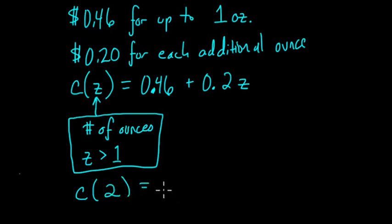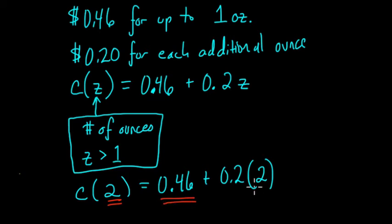Look what happens if you plug in 2 for Z. We get 0.46 plus 0.20 times 2. And now think about this, it doesn't make any sense. Why? Because for a 2 ounce letter, you would pay the 46 cents for the first ounce and then only one group of 20 cents beyond that. Remember, it's only 20 cents per each additional ounce past the first ounce. So something with our formula is wrong.